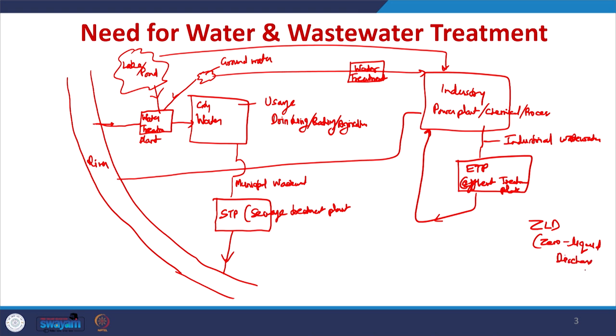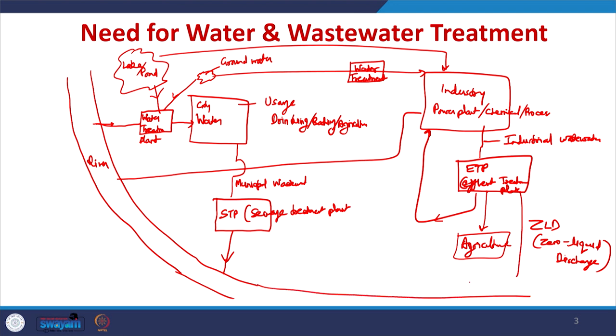If the industry is allowed to give water for agricultural uses — like a sugar industry — then that water will go into the fields where it may be used for agriculture. Similarly, it is possible for the water to be discharged into a river. Depending upon the final uses of the water after treatment in the industry, recycling may be done, it may be discharged to agriculture, or it may be discharged to any of the aquatic bodies. So there is a difference I wanted to highlight: water treatment and wastewater treatment are different.